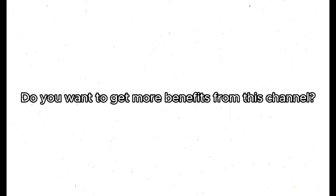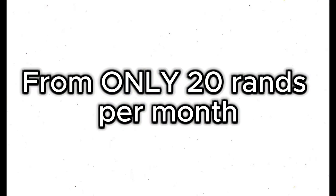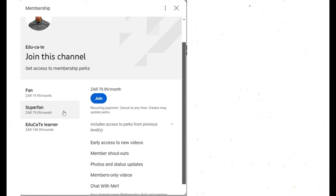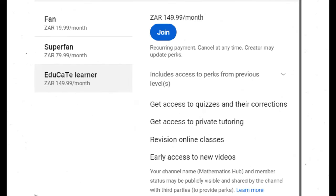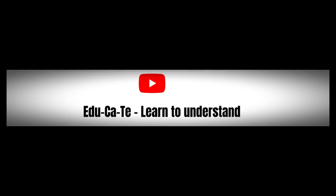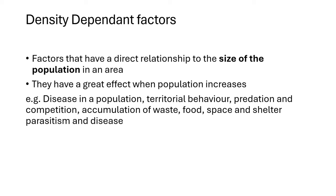From only 20 rands per month, you too could become a member and get exclusive benefits and even private tutoring. Click join on our channel page to find out. Now the second type of environmental resistance: density dependent factors. There are many examples of density dependent factors.